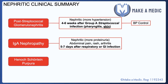IgA nephropathy also causes nephritic syndrome but it also tends to be associated with more widespread features such as abdominal pain, a rash, and arthritis. It's the most common cause of nephritic syndrome and tends to occur about five to seven days after a respiratory or GI infection. These two diseases are relatively often mistaken for each other, but the main thing to remember is that the timescale differs — post-streptococcal GN is four to six weeks after an infection, whereas IgA nephropathy is much shorter.